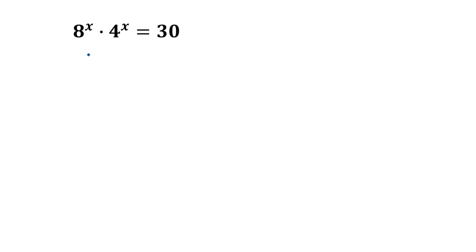Hello everyone. In this video I am going to show how to solve 8 to the power x times 4 to the power x equals 30. 8 can be written as 2 to the power 3, so this is 8 to the power x, times 4 — which can be written as 2 squared — to the power x, is equal to 30.